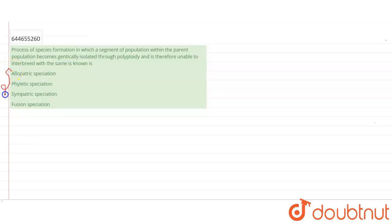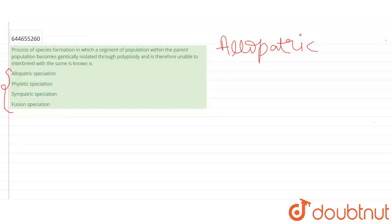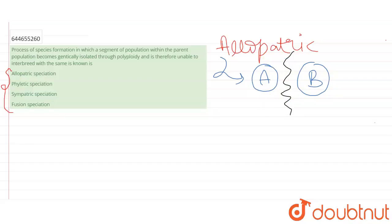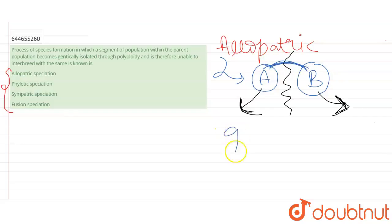Starting with allopatric speciation: this is a type of speciation in which two populations of the same species — population A and population B — show positive interbreeding among themselves, but due to certain geographical barriers they are not able to interbreed. When they are unable to interbreed, they lead to the formation of different species. Species A moves forward to create its own individual form, and species B shows an altogether new form, as interbreeding between them has stopped due to geographical barriers.